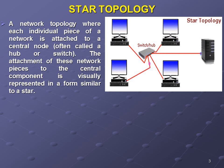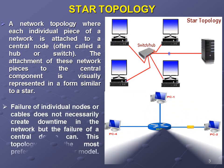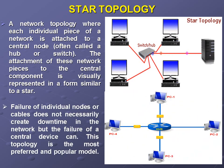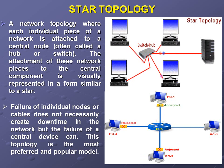In star topology, if one cable connection fails, it does not necessarily create downtime in the network. However, failure of the central device — the hub or switch — will bring down the whole topology. Star topology is the most preferred and popular model in use today.